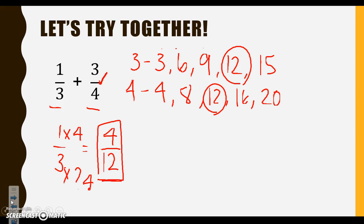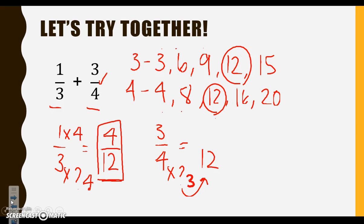Let's take a look at 3 fourths and convert that into a fraction with a denominator of 12. We ask ourselves, 4 times what gives me 12? The basic math fact is 4 times 3 equals 12, or we can count our multiples: 1, 2, 3 — it was the third one. Whatever I do to the bottom, I must do to the top. So 3 times 3 equals 9. I have my two fractions and they both have a denominator of 12.